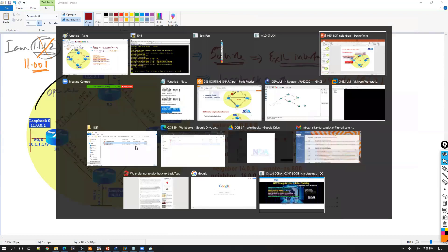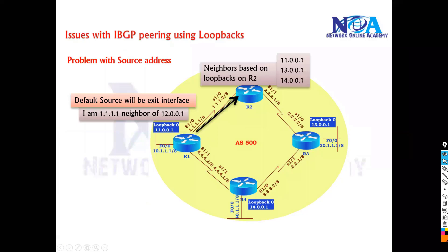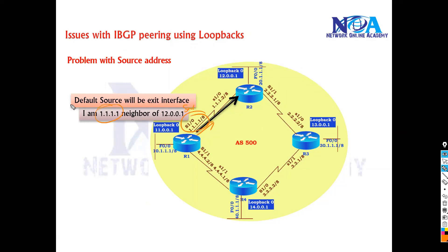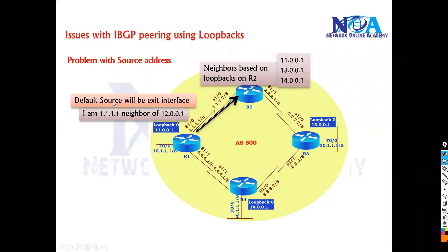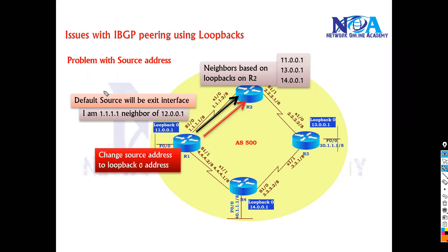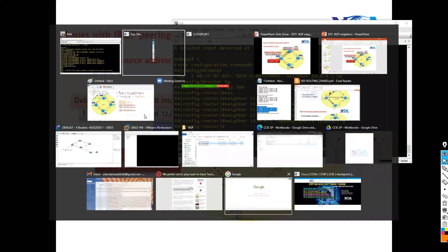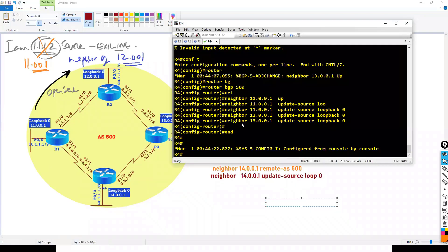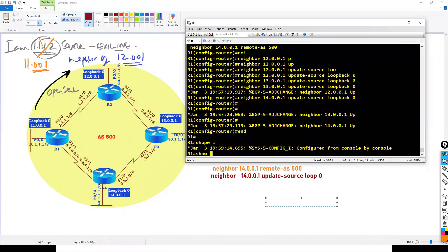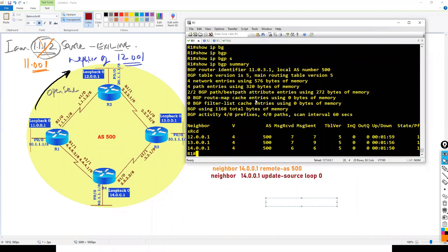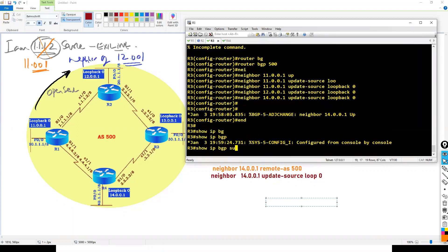The main issue is that by default when a packet is sent, the source address will always be the exit interface. But the routers are not recognizing each other based on exit interfaces — they are trying to form neighborship based on the loopbacks. So I need to tell router one to change its source address to 11.0.0.1, which is loopback zero. We add the command 'update-source loopback 0', and now if I go and verify with 'show ip bgp summary', the neighborship is up and I'm getting routes.